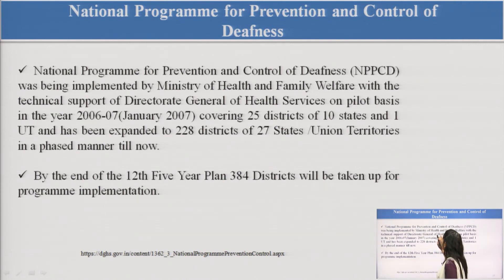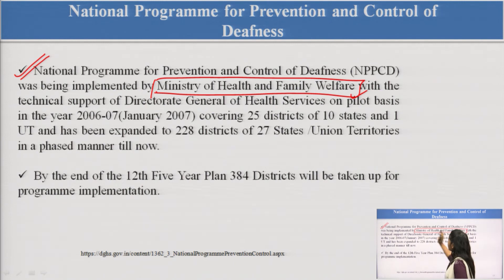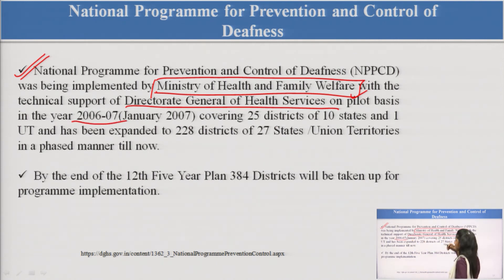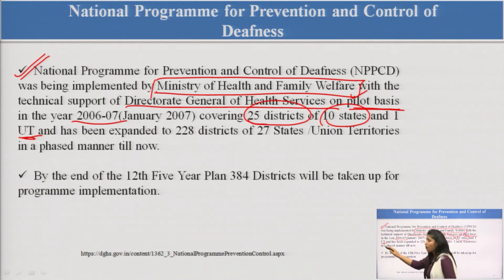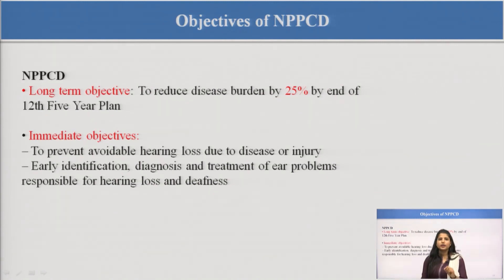We have a program for controlling and preventing this — the National Program for Prevention and Control of Deafness. It is implemented by the Ministry of Health and Family Welfare with the support of DGHS. It was launched in 2006–2007 on a pilot basis, covering nearly 25 districts of 10 states and 1 union territory. Now it has been expanded to 228 districts of 27 states and union territories in a phased manner. There are two goals: a long-term goal and an immediate goal.